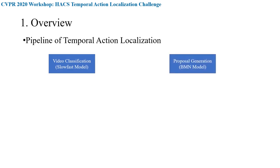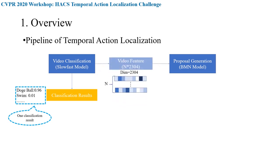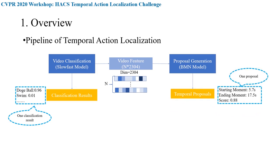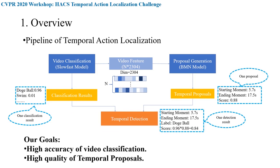We first train a video classification model separately on the training set, so that the video classification results of the validation and test sets can be directly obtained. Then, we use the fine-tuned backbone to extract features of each video along the temporal dimension to obtain a feature sequence. We enter this feature sequence into a proposal generation model to get proposals, and fuse high-quality proposals with video classification results for the final detection. Our goals are high-accuracy video classification and high-quality temporal proposals.